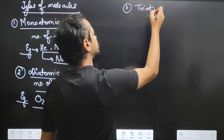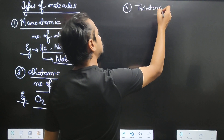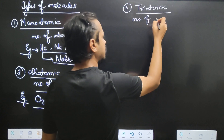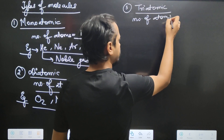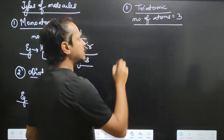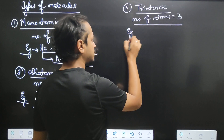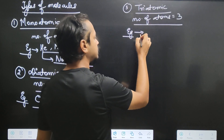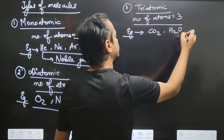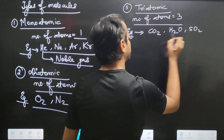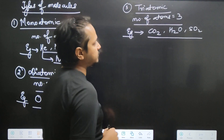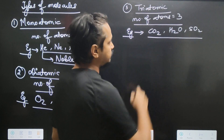Triatomic molecules have a number of atoms equal to 3. Examples of triatomic molecules include carbon dioxide, water, and sulfur dioxide — CO2, H2O, SO2.